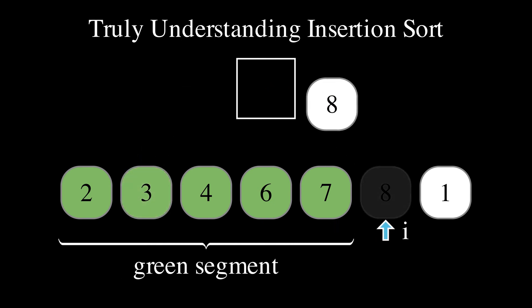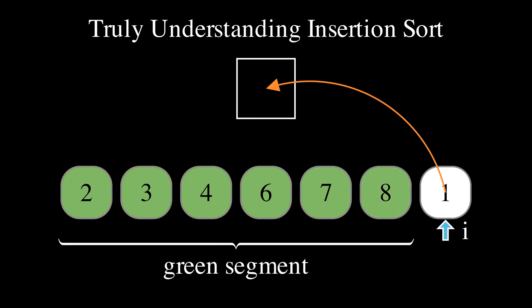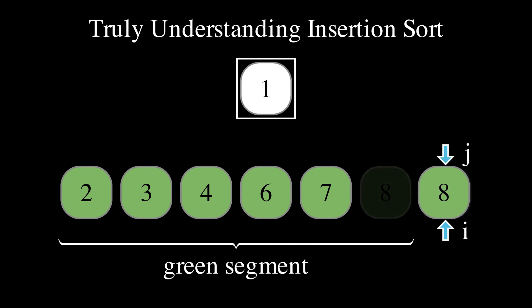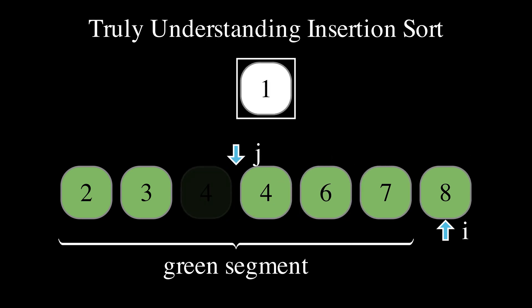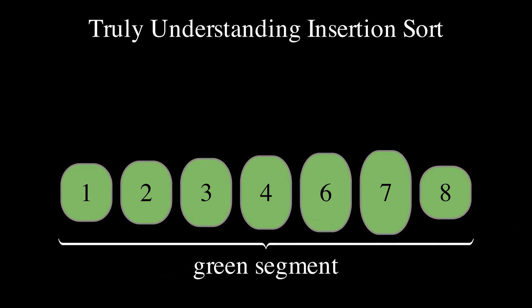Store 8 into the temporary location. No elements are shifted because 8 is larger than all elements in the green segment. Insert 8 back into the array. Store 1 into the temporary location. All other elements in the array are larger and therefore get shifted to the right. Insert 1 back into the array. The green segment encompasses all elements, and therefore the array is now known to be sorted.